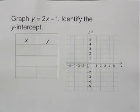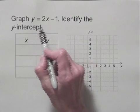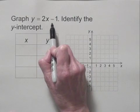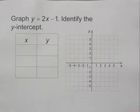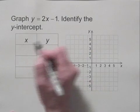Graph y equals 2x minus 1. Identify the y-intercept. Well, this equation is written in the form y equals mx plus b. b is the second coordinate of the y-intercept. So we know that the y-intercept is 0, negative 1.